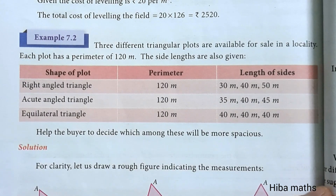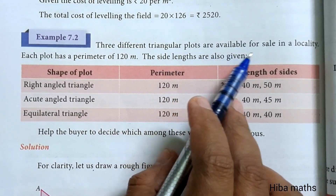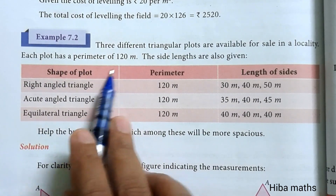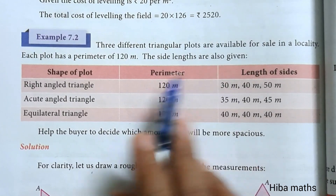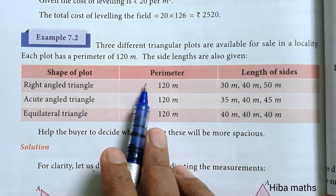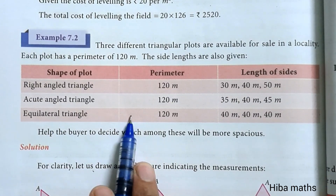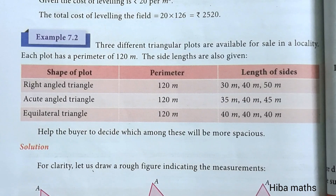Hello students, welcome to Hibamax 9 Standard, Chapter 7, Example 1.2. Three different triangular plots are available for sale in a locality. Each plot has a perimeter of 120 meters. The side lengths are also given. The shapes include acute angle triangles and equilateral triangles. Help the buyer decide which among these will be more spacious.